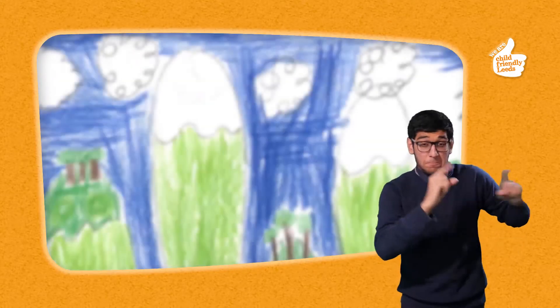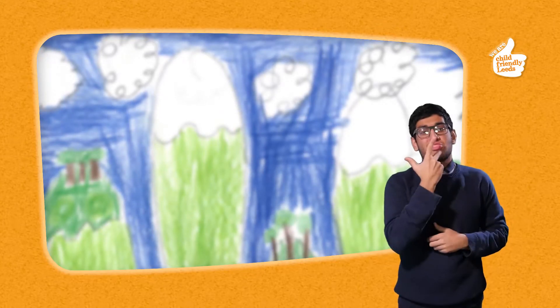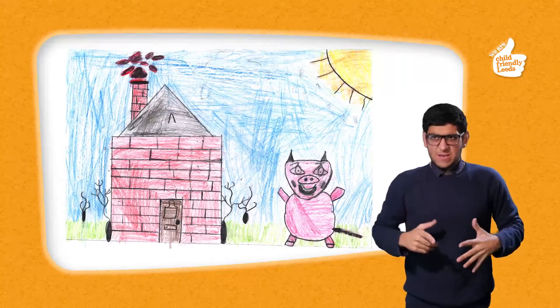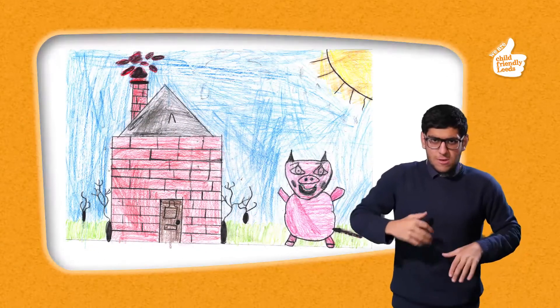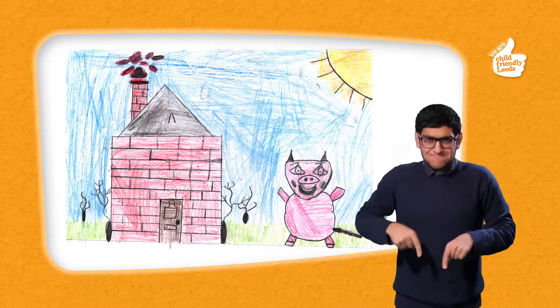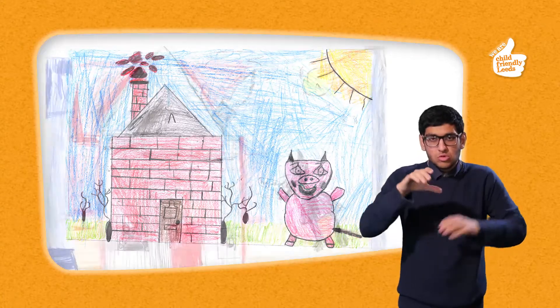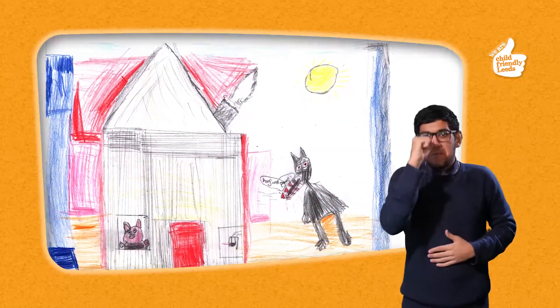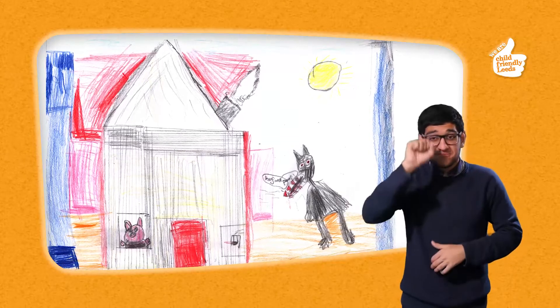And the second little pig had to run as fast as he could to the third little pig's house, made of bricks. And the wolf said, Right, right now. And he limped with his broken arm and his foot in a pot. And he went to the brick house. And the third little pig was there.